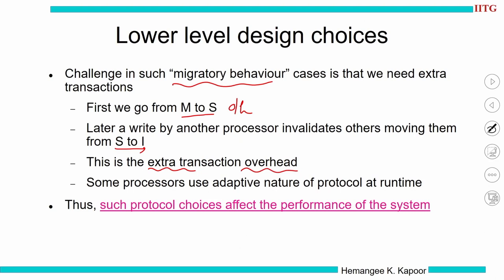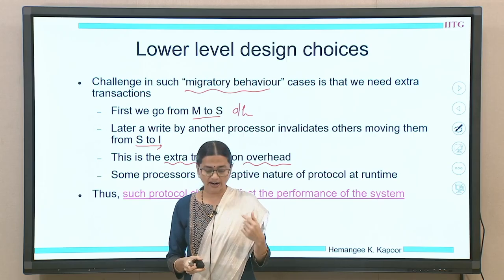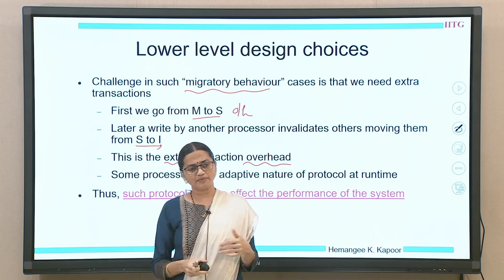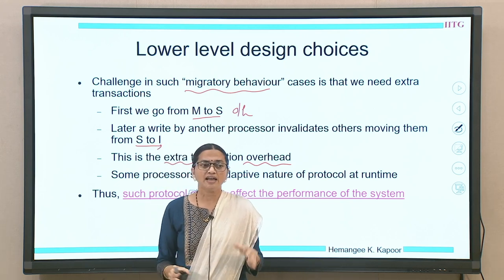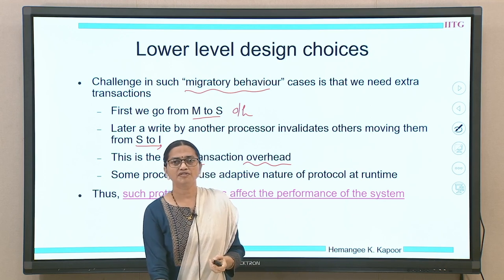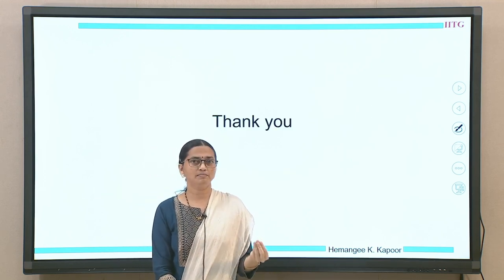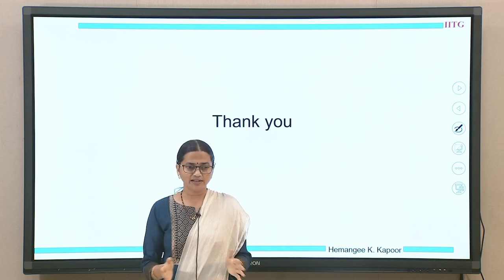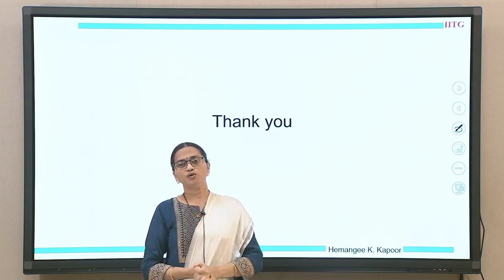The challenge is called migratory behavior — the block keeps moving from one processor to another for writing, so the assumption of retaining it for long reads no longer holds. The overhead: going M→S then S→I is an unnecessary extra transaction. Some processors modify the protocol at runtime — detecting this behavior and switching from M→S to M→I to avoid the overhead. The designer has several choices, and the choice affects system performance. This concludes the MSI protocol discussion.